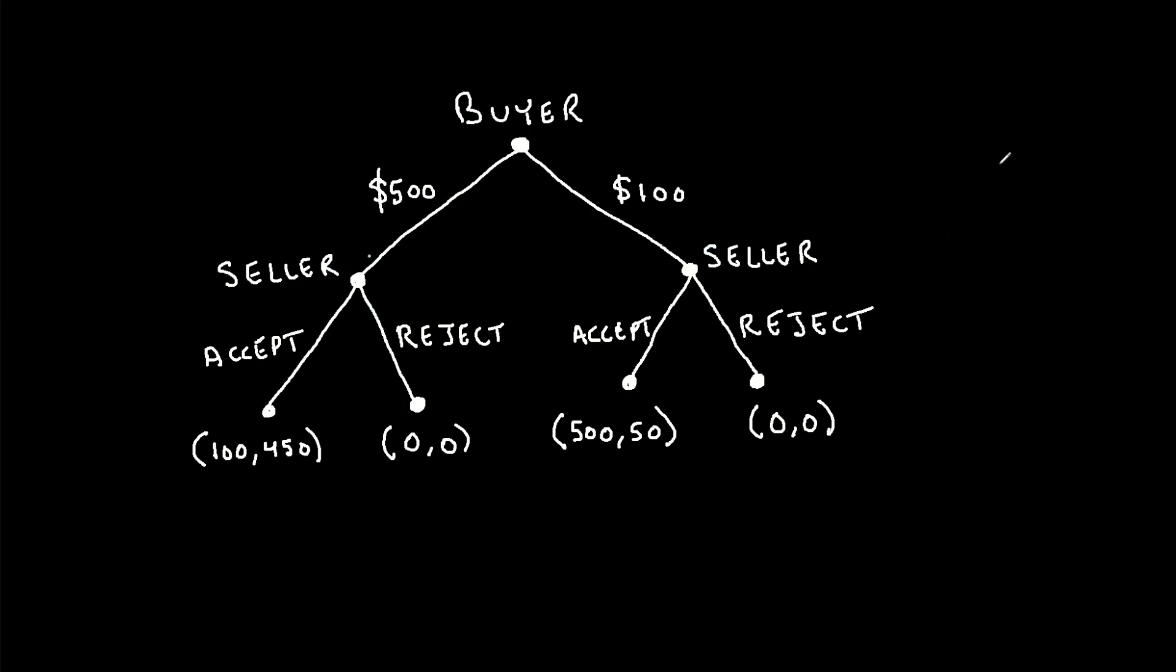So for this particular game, let's consider this first end node right here. The seller has a decision to make. If they reach this point in the game, they can either accept the offer made by the buyer, or they can reject it. Now we can see, if the seller accepts the offer, they get a payoff of $450. But if they reject the offer, they get a payoff of $0.